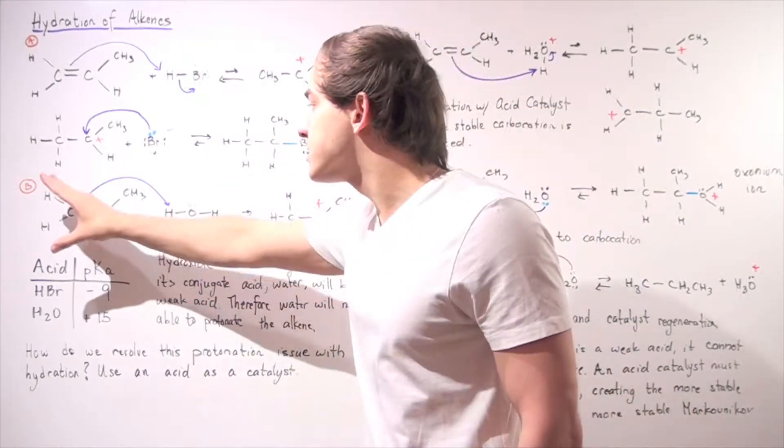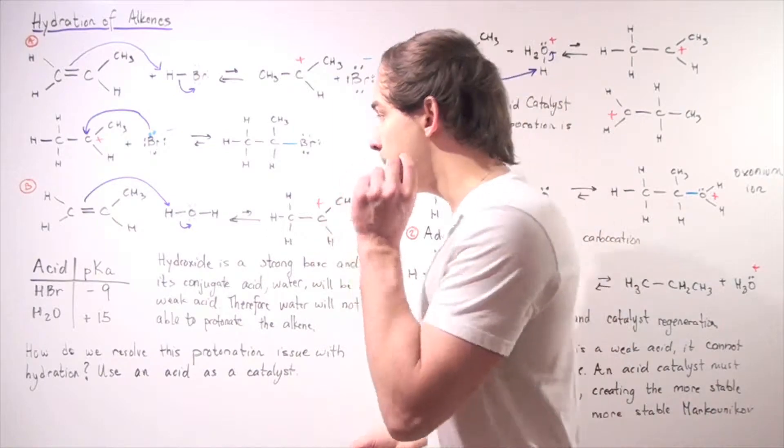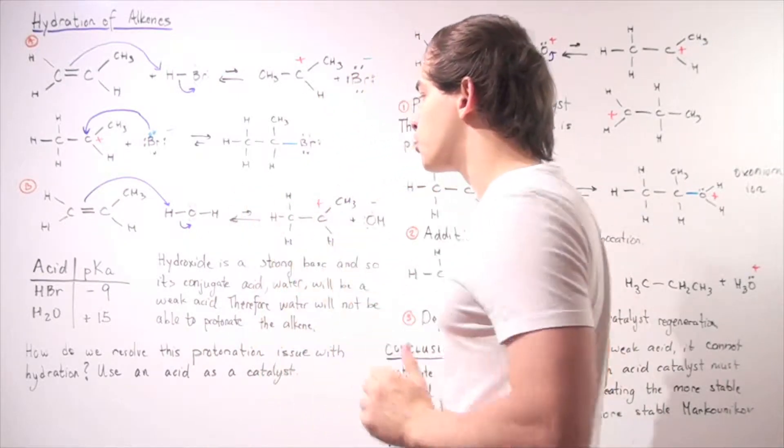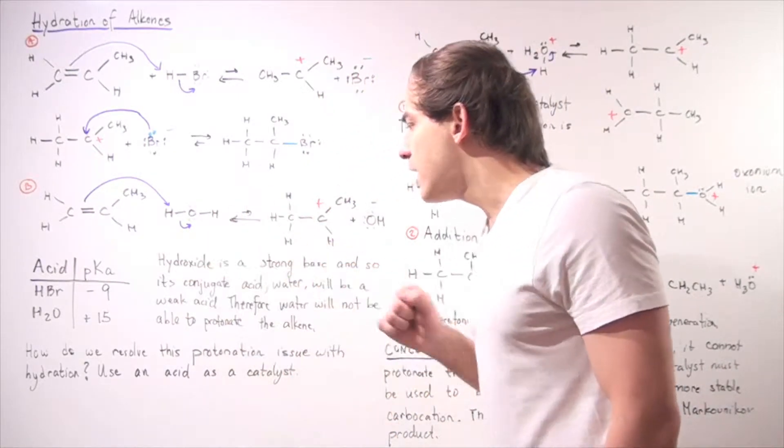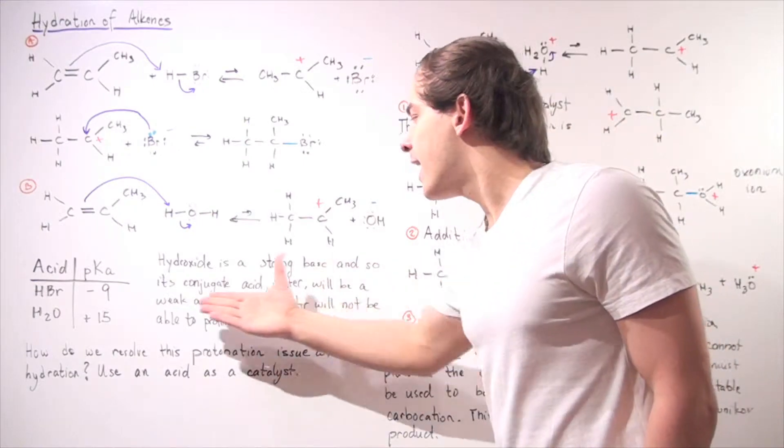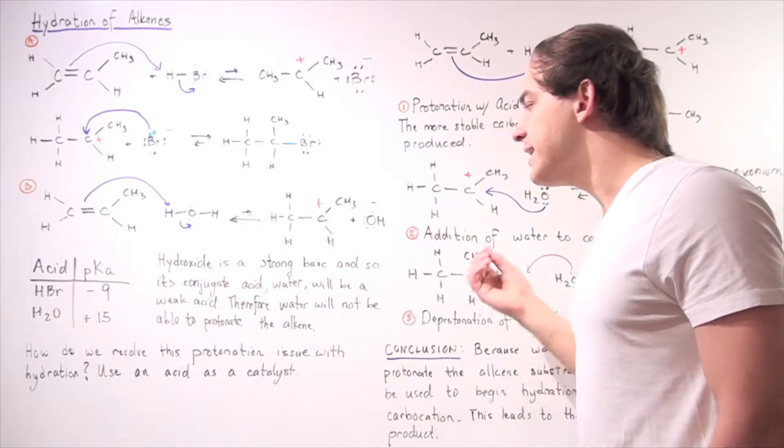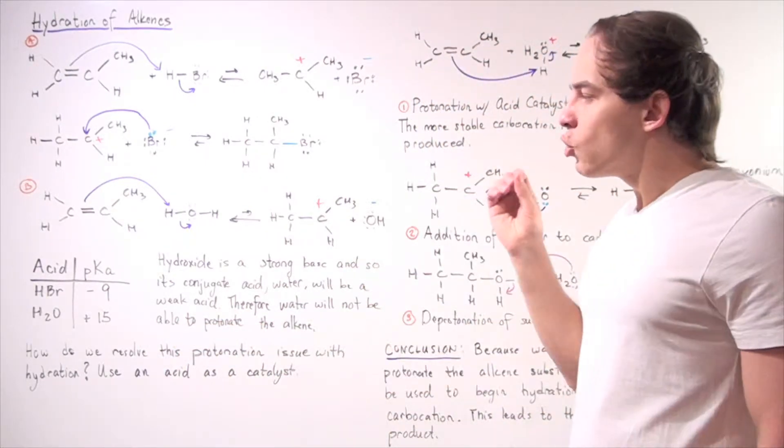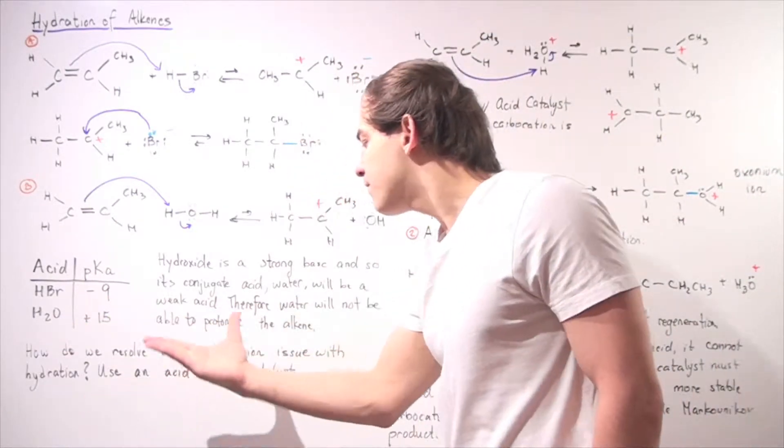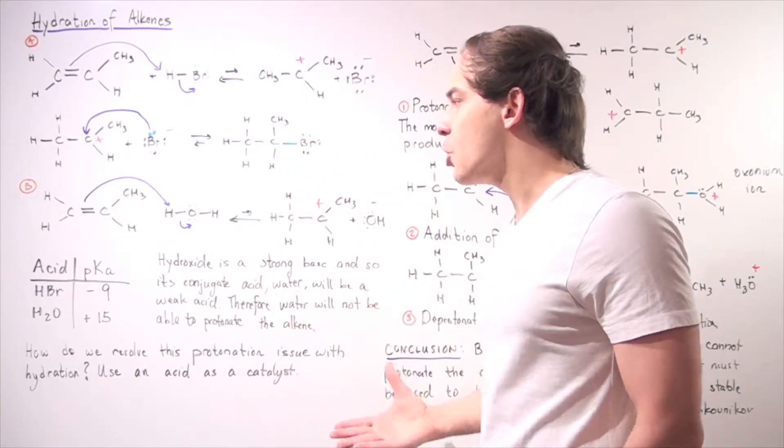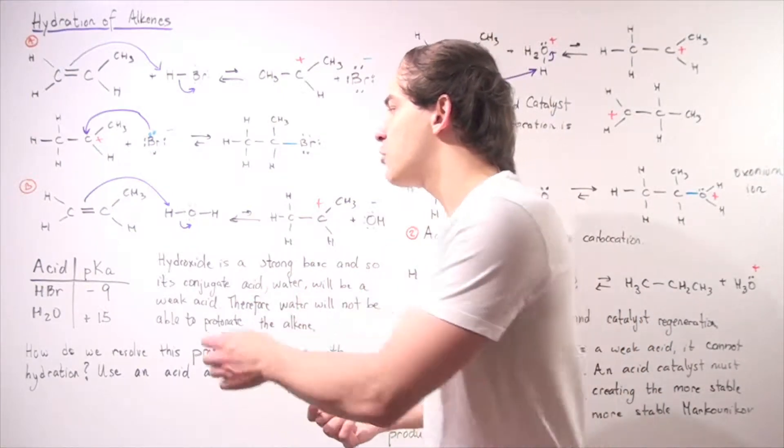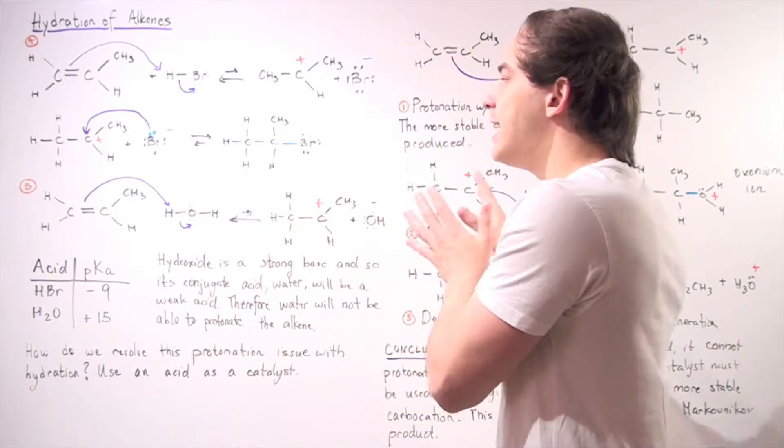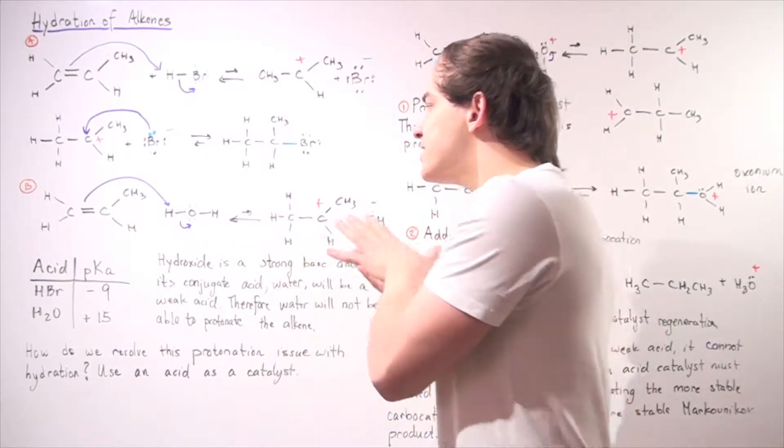And so that means this protonation step will not take place readily because this water molecule will not protonate this alkene at a very good rate. So once again, hydroxide is a strong base and so its conjugate acid, water, will be a weak acid. Therefore, water will not be able to protonate the alkene. So the question is the following, how do we resolve this protonation issue with hydration? So hydration is simply the addition of our water molecule that is able to create an alcohol as we'll see in just a moment. So how do we resolve this issue?